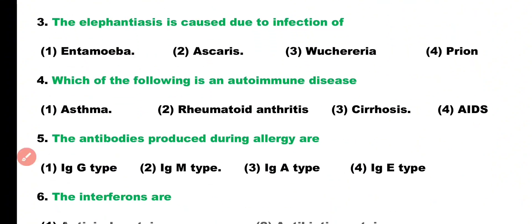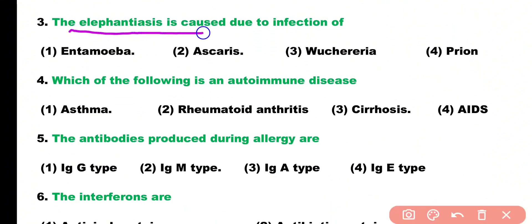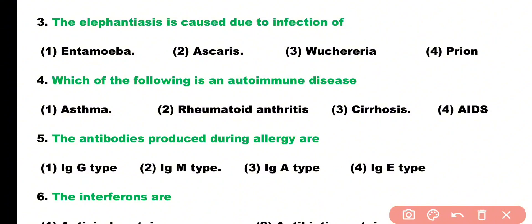Question number three: elephantiasis is caused due to infection of which organism? Options: Entamoeba, Ascaris, Wuchereria, or prions. Correct answer is option three — elephantiasis is caused by Wuchereria bancrofti.